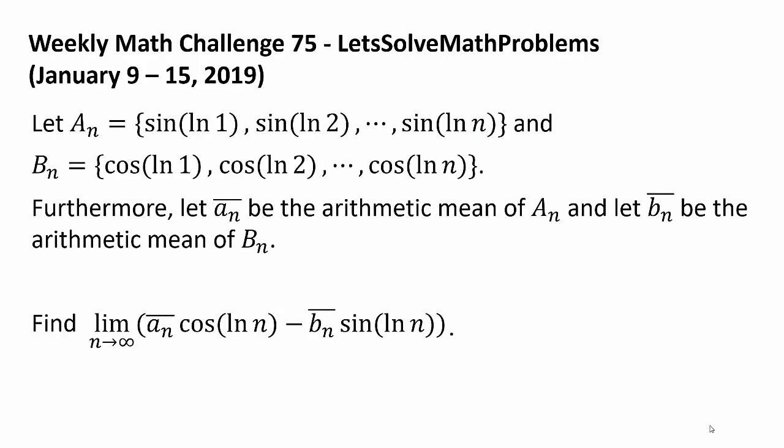It's time to look at this week's challenge. Let a sub n be the set containing sin of ln(1), sin of ln(2), all the way to sin of ln(n), and let b sub n be the same thing except all the sines are replaced with cosines. Furthermore, let a sub n bar be the arithmetic mean of a sub n, and let b sub n bar be the arithmetic mean of b sub n. Find the limit as n approaches infinity of a sub n bar times cosine of ln(n) minus b sub n bar times sine of ln(n).